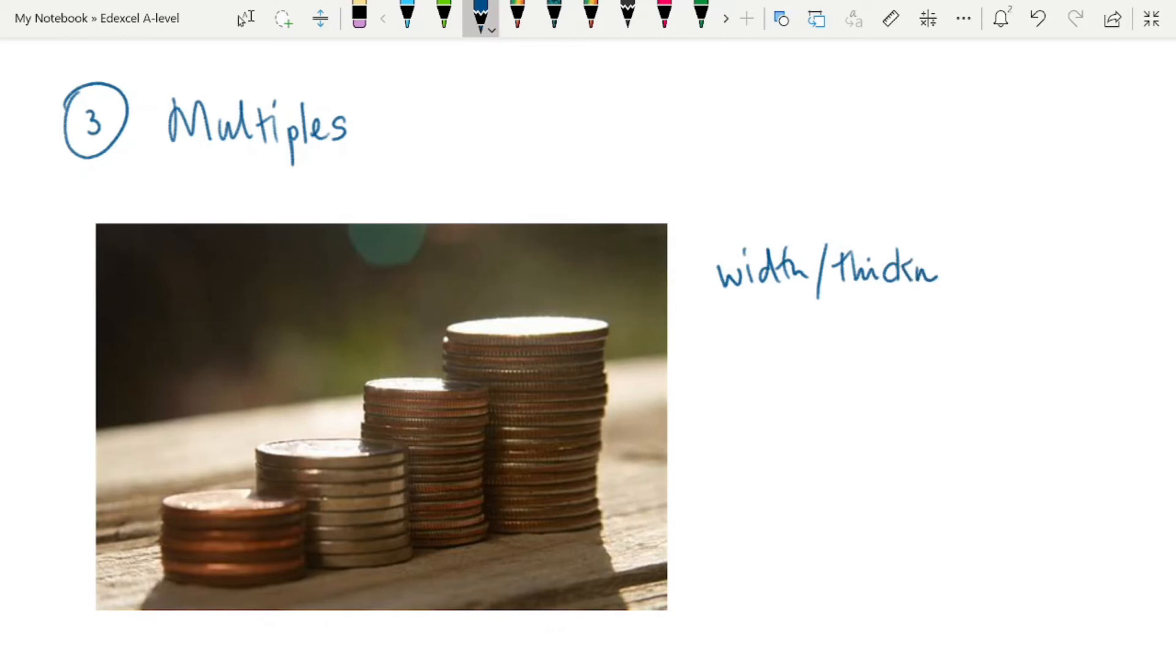We can take out a meter rule, and we can do it like that. A 2p coin in the UK is 1.85 millimeters thick. So let's look and assess.